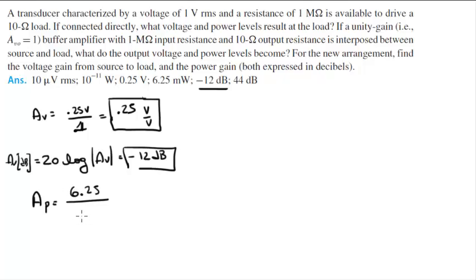V squared over R, which is 0.5 squared over R, which is 1 megaohm. And you're gonna get that the power gain is 25,000.